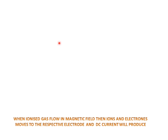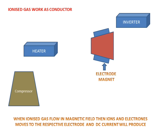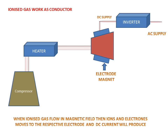As we discussed, in a current-carrying conductor, in this MHD we will use ionized gas to work as a conductor. We will have an inverter, heater, compressor, and electrode magnet — this is our MHD system. They are all connected through pipes.